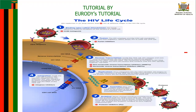Step one is also called the binding stage. At this stage, the HIV binds or attaches itself to the receptors on the surface of the CD4 cell. That is the first step because for the HIV virus to become active in the body, it will need the presence of the CD4 cells.